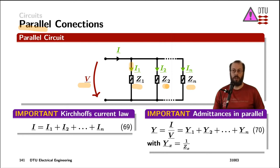Each of them has their own specific current - I₁, I₂, and all the way up to Iₙ. Kirchhoff's current law says that the sum of all those currents equals the total current flowing into the parallel circuit.